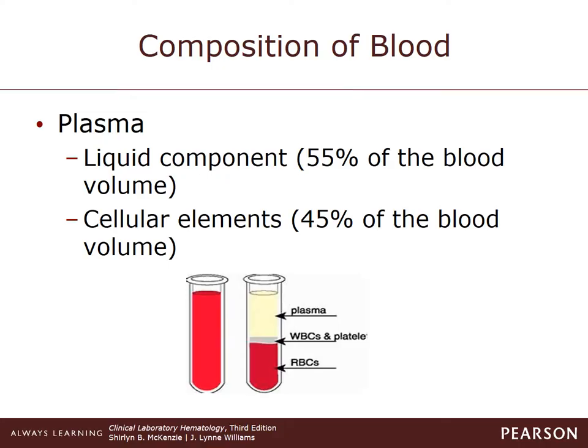The principal ions necessary for normal cell function include calcium, sodium, potassium, magnesium, hydrogen, and chloride. The main protein constituent of plasma is albumin, which is the most important because it maintains osmotic pressure. It also acts as a carrier molecule, which transports compounds such as bilirubin and heme to where they are needed.